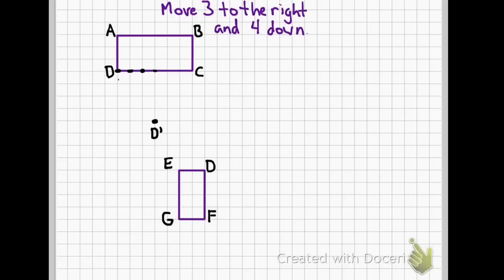Then we do the same thing with c. Three to the right and four down gives us c prime. Now we'll go with b, three to the right, four down gives b prime.